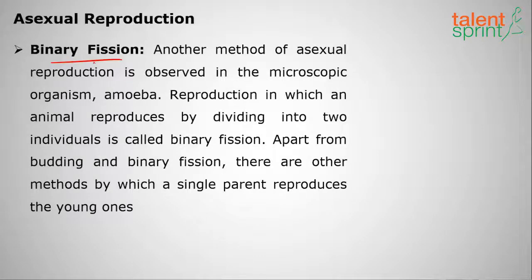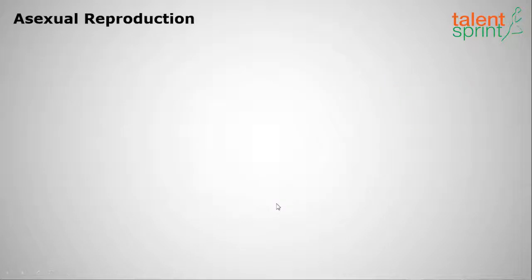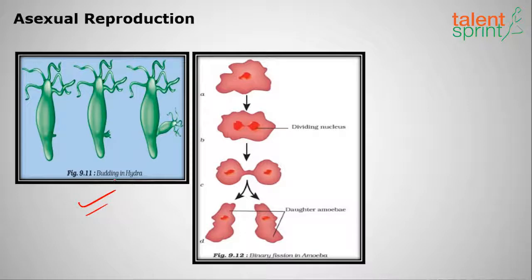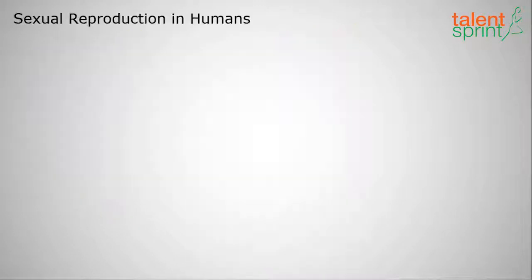The next asexual method is binary fission, where an animal reproduces by dividing into two individuals — one divides into two. Apart from budding and binary fission, there are other asexual methods. Hydra is an example of budding, and amoeba is a classic example of binary fission. These are generally unicellular organisms.